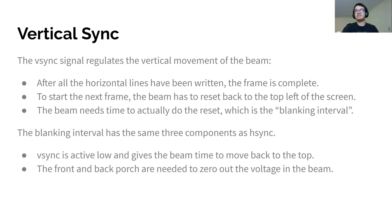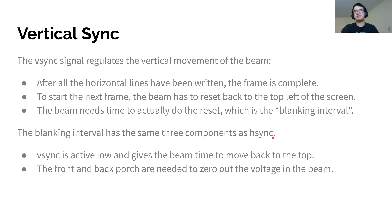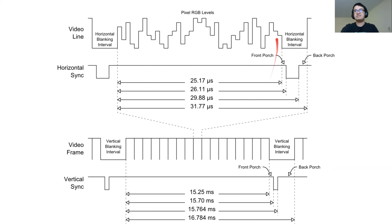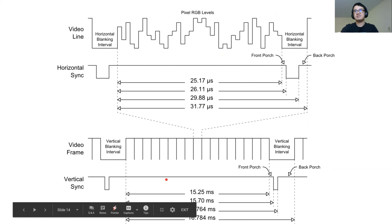There's also a vertical sync, which works on the exact same idea but in the opposite direction. Once you've reached the end of the frame entirely — all the way to the bottom and all the way to the right — you need to reset the electron gun to go back to the top. It has its own blanking interval, a different amount of time than the horizontal sync, but the same idea: moving the electron gun back to the top and zeroing out the voltage. You can see that the timing is a little different because it takes a different amount of time to reset the gun to the top.